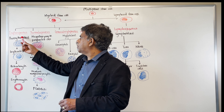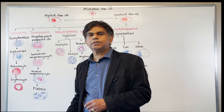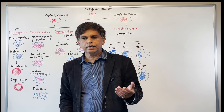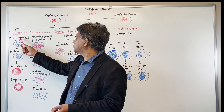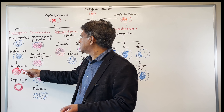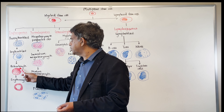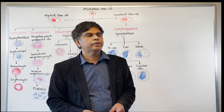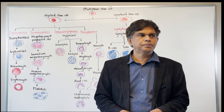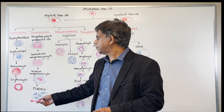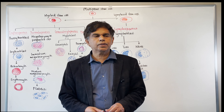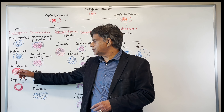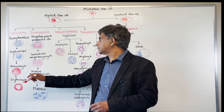Let's look at erythropoiesis. What is the stimulant? Erythropoietin, produced in the kidneys. The stages are: pro-erythroblast, erythroblast, reticulocyte, and erythrocyte. The lifespan of a reticulocyte is about three days in the blood, and the lifespan of an erythrocyte (RBC) is 120 days. Good to remember: reticulocyte is three days, RBC is 120 days.